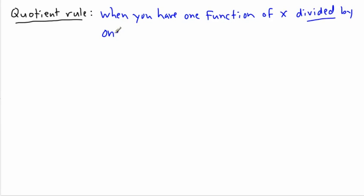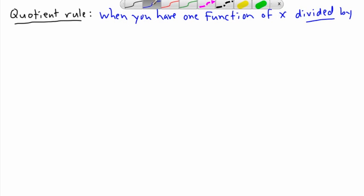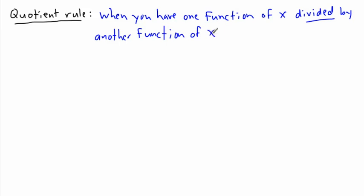Like the product rule, we have a rule for this. If we have y equals u over v, so some function of x divided by some function of x, then we have an equation for the derivative, the slope of the tangent at any point.